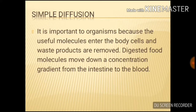Digested food molecules move down a concentration gradient from the intestine to the blood. Some examples of diffusion: placing food coloring in a liquid will diffuse the color, or a tea bag placed in a cup of hot water will diffuse into the water. Several factors affect the rate of diffusion of a solute, including the mass of the solute, the temperature of the environment, the solvent density, and the distance traveled.